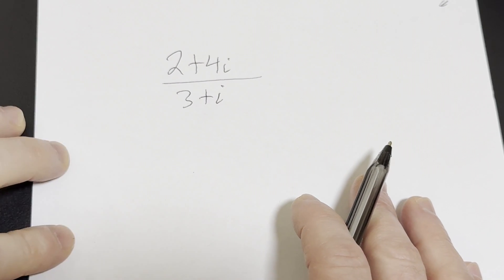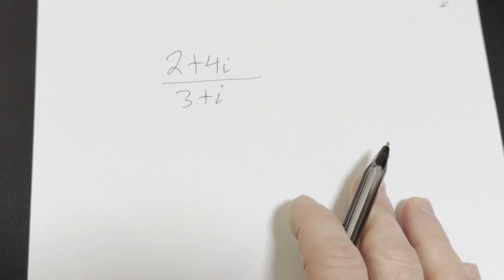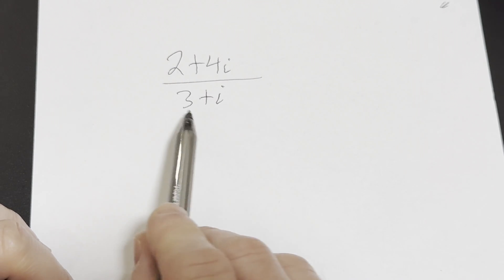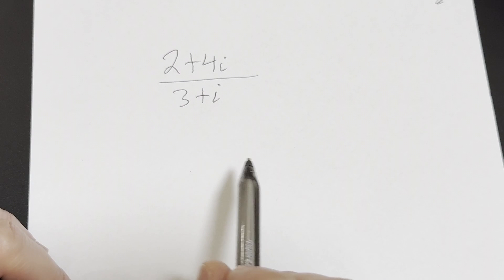Hi, in this video we're going to be doing a simple example of dividing two complex numbers. So we have the complex number 2 plus 4i, we're going to divide it by the complex number 3 plus i.